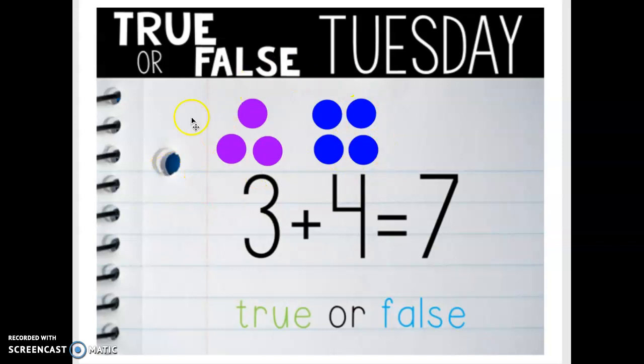I have 7 total dots right here. So 3 plus 4 equals 7. Is that true or false? It's true. Good job. So let's circle the word true.